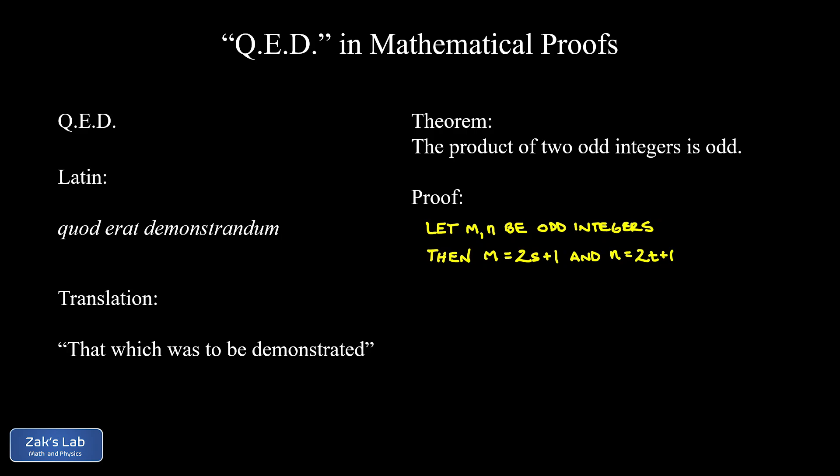N is going to be expressible as 2 times some integer plus one. In other words, just one more than some arbitrary even number. To be extra thorough, we're going to indicate that S and T are integers. So where S and T belong to the set of integers, which we can abbreviate as a blackboard bold Z.